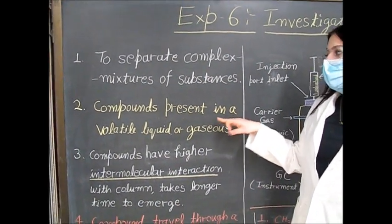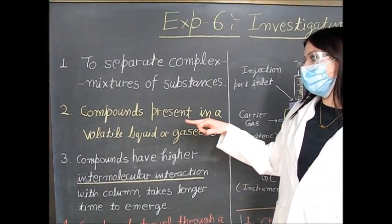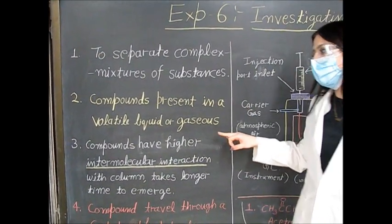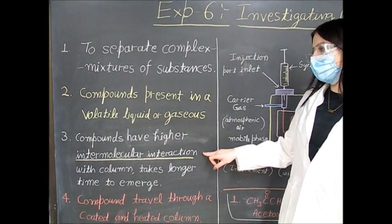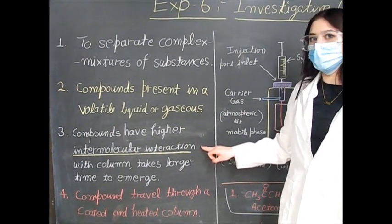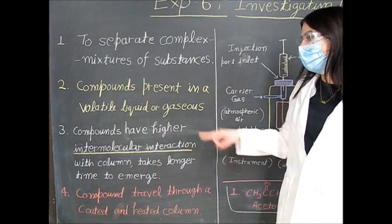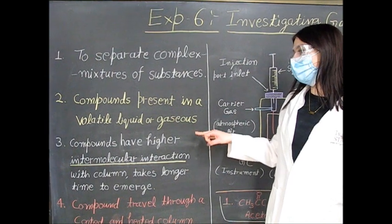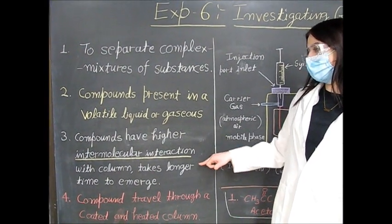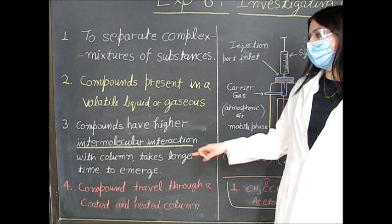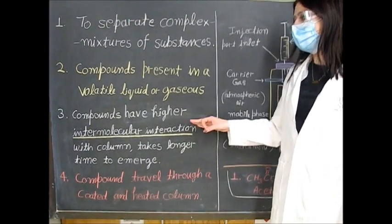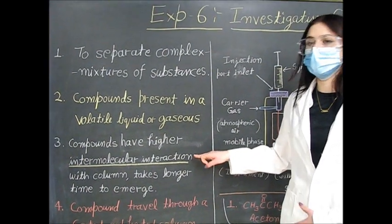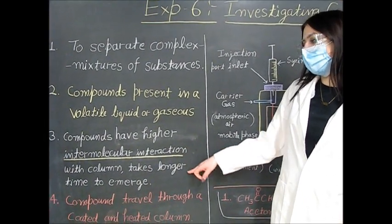We can use GC to separate mixtures of compounds present in volatile liquid form or gas form. The separation of these compounds is dependent on the intermolecular interactions of the compound. Compounds with higher or larger intermolecular interactions will elute through the column longer so they will come out slower, and inversely if they have less intermolecular interactions they will come out faster.